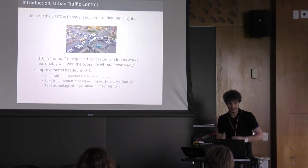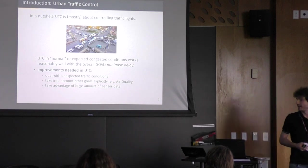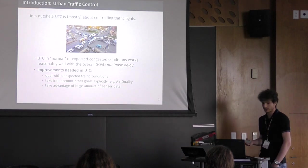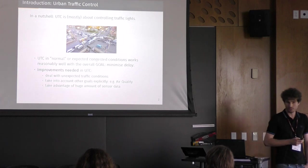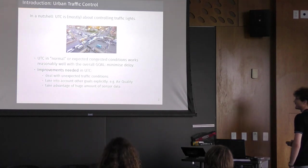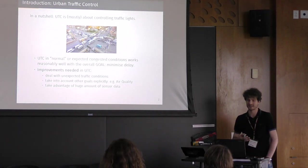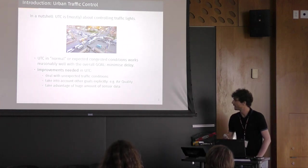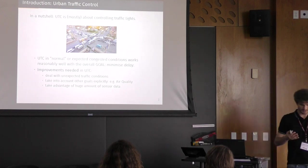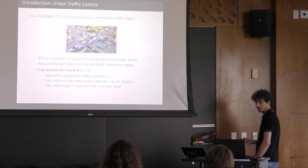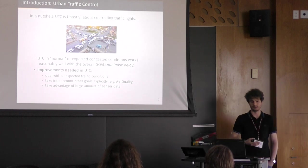But clearly, there are some improvements that seem to be needed and that I think we can probably address as AI or as planning. First, current techniques for urban traffic control need to be able to improve their capacity, their capabilities to deal with unexpected traffic conditions. Second, take into account different goals explicitly. For instance, air quality or focusing on specific links, specific areas, specific car parks, something like this. And clearly, since we're speaking about the age of sensors, the age of data, there is a huge amount of sensor data which is available. And we should somehow try to take advantage of that.